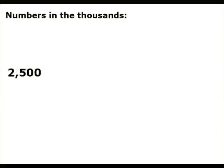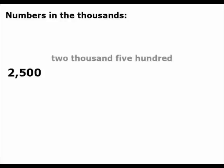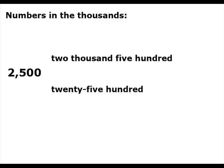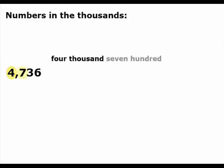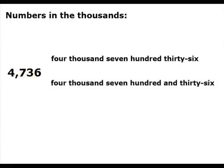There are two ways to say this number: 2,500 or two thousand five hundred. When saying large numbers, you count unit by unit. 4,736 or four thousand, seven hundred and thirty-six.